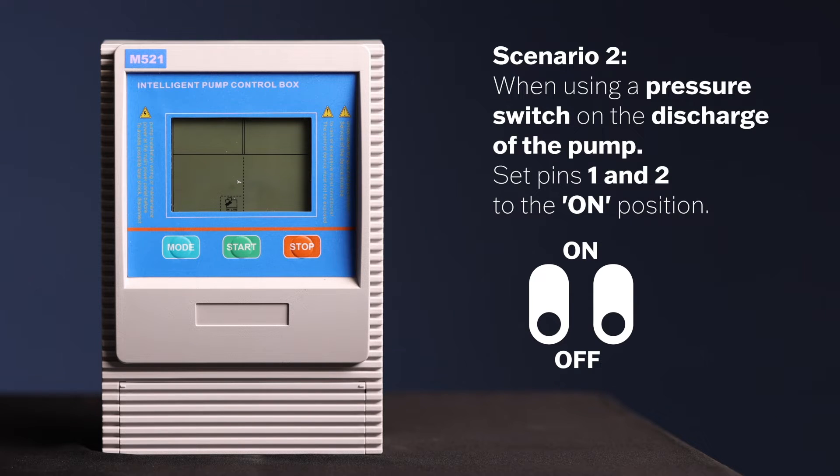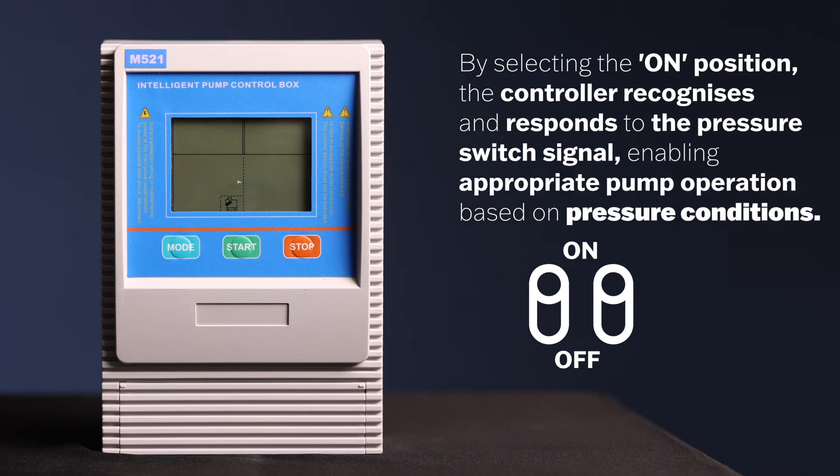Scenario 2: When using a pressure switch on the discharge of the pump, set pins 1 and 2 to the ON position. By selecting the ON position, the controller recognizes and responds to the pressure switch signal, enabling appropriate pump operation based on pressure conditions.